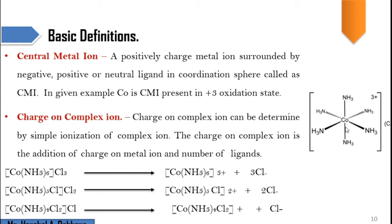Another important topic is the charge on the complex. We need to determine the charge on the complex, and this can be done by the simple ionization method. Consider the example of hexamine cobalt chloride. The square bracket here is called the coordination sphere. Inside it we have the metal cobalt and the ligand NH3.